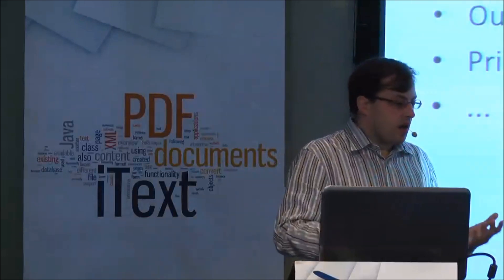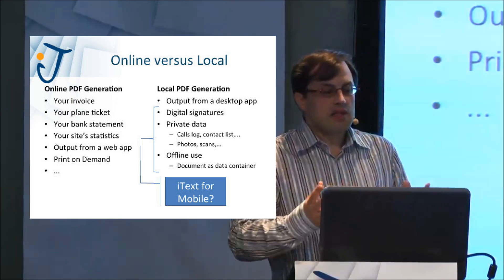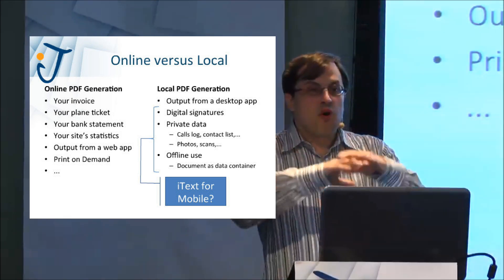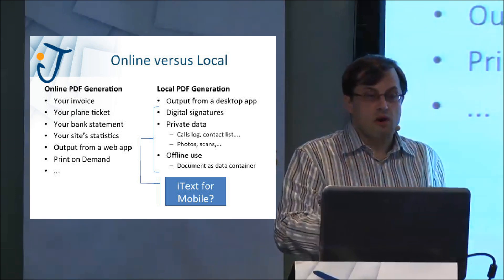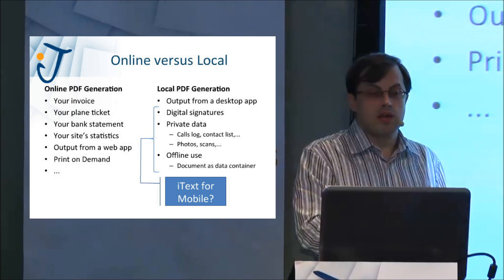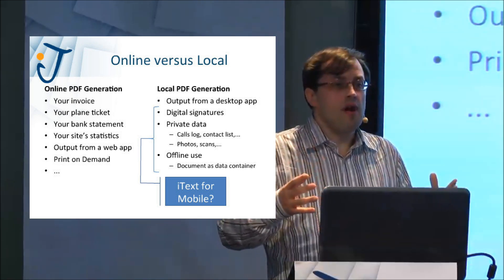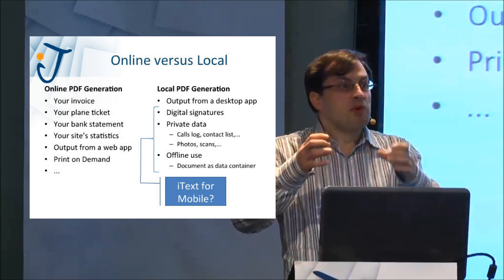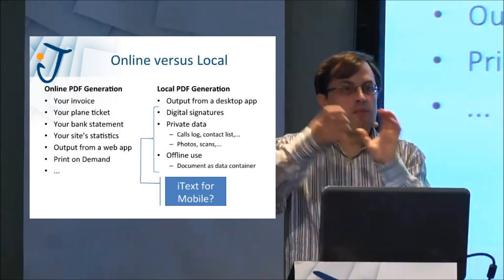If we talk about devices, does it make sense to create PDF on a device? Let's look at online versus local. For online PDF generation, our customers — we've already talked about invoices. You buy something in a web store and get an invoice in PDF created by iText. Or we fly to the States using KLM, register, and get a boarding pass — iText is used to create the boarding pass. Bank statements, site statistics, output from a web app. It doesn't even have to be a PDF. For instance, Faber & Faber, a publisher of books, has many books out of print. You can order one, and using iText they create a nice PDF and print the book on demand.